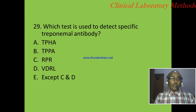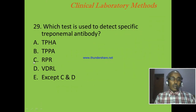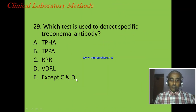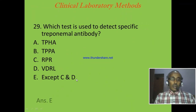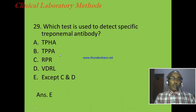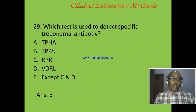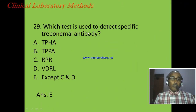Question 29: Which test is used to detect specific treponemal antibody? A: TPHA, B: TPPA, C: RPR, D: VDRL, E: Except C and D. The correct answer is E — except C and D — because VDRL and RPR are non-specific tests; TPHA and TPPA detect specific antibodies that bind treponemal antigen.